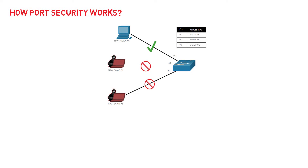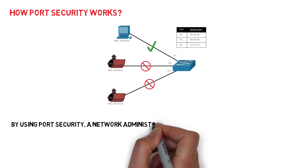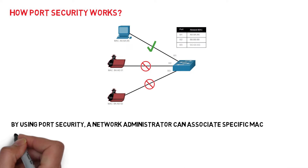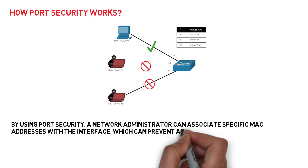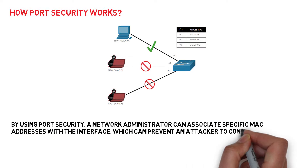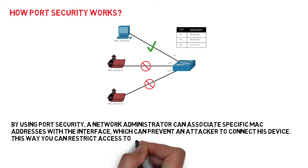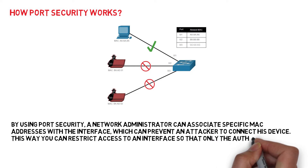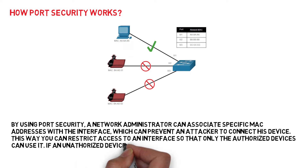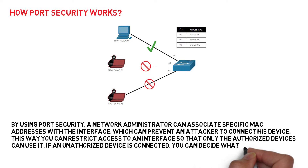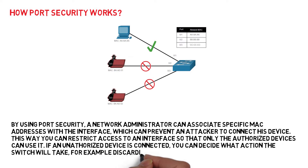How does port security work? By using port security, a network administrator can associate specific MAC addresses with the interface, which can prevent an attacker from connecting his device. This way you can restrict access to an interface so that only authorized devices can use it. If an unauthorized device is connected, you can decide what action the switch will take — for example, discarding the traffic and shutting down the port.